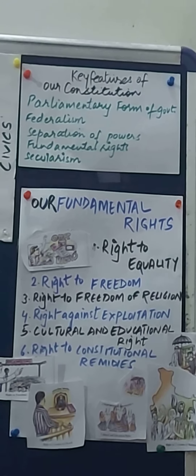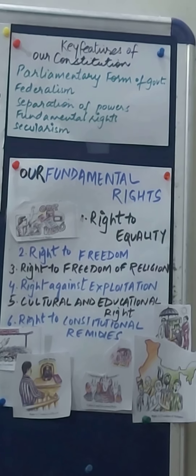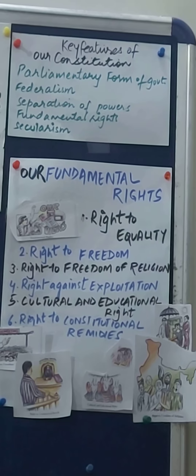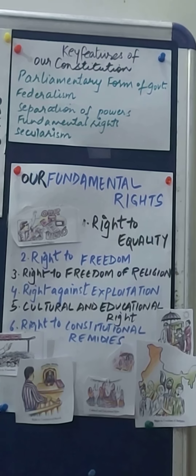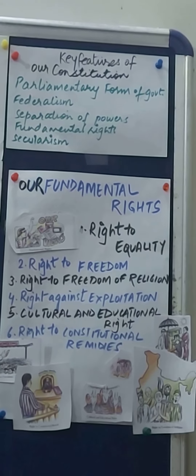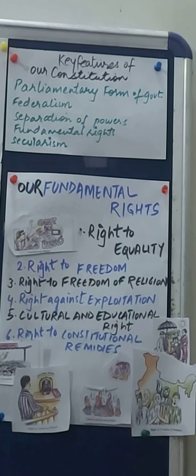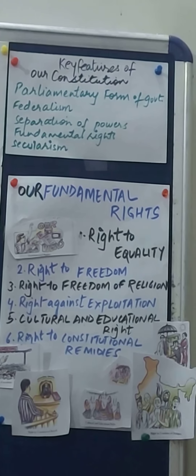The president and the state governors are the nominal heads of the executive. The real power is vested in the hands of the council of ministers, which is headed by the prime minister at the centre and the chief ministers in the states. They belong to the majority party in the parliament and the state legislature. I hope this first feature — parliamentary form of government — is clear to all of you.